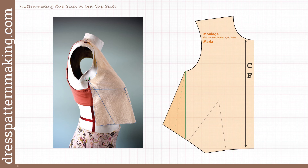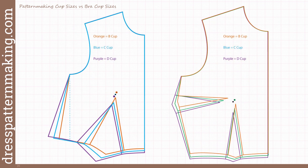If you have a big bust and a small waist, you can end up with a very large waist dart, but this is not a problem. You don't have to use a one-dart block — you would usually use a two-dart block, and in making your pattern you can manipulate that dart anywhere to create styles that suit you. I'm using the one-dart block here because it's easier to explain and easier to see how the bust cup works.